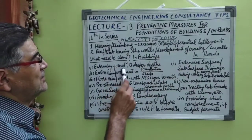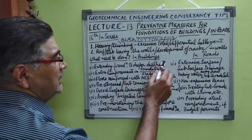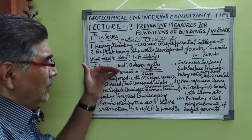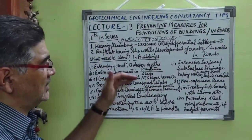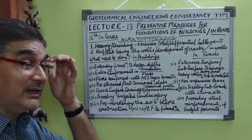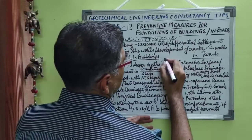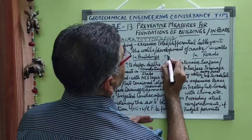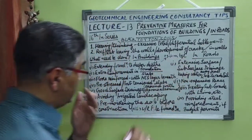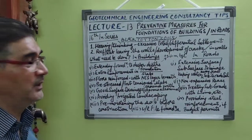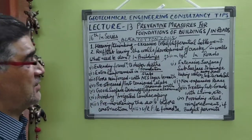Number one: you can extend the foundation of such structures to deeper depths. By deeper depths, we mean to a depth where the alternate shrinkage and swelling effects of such soils are nil or nullified. Research over the past years has shown that after a depth of 3.50 meters below ground level, the detrimental effects of such soils are assumed to be zero or negligible, and will not affect your foundations or the stability of structures.